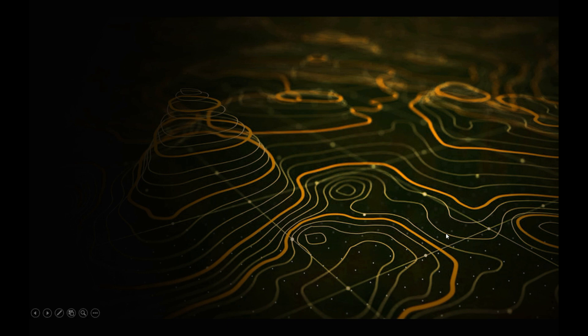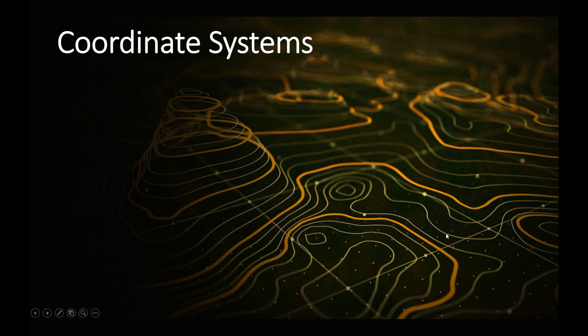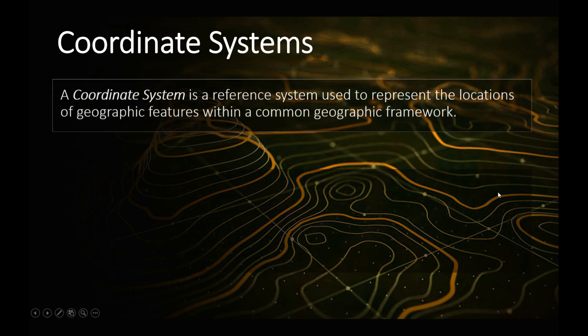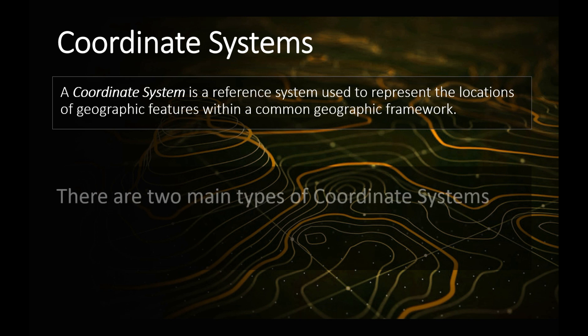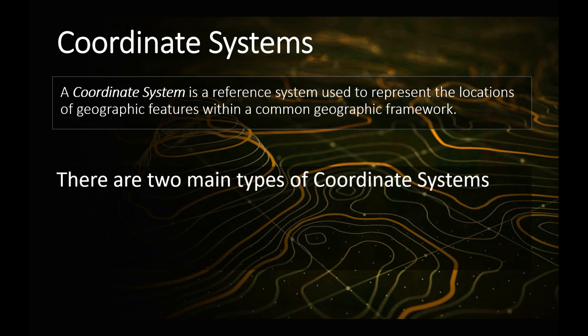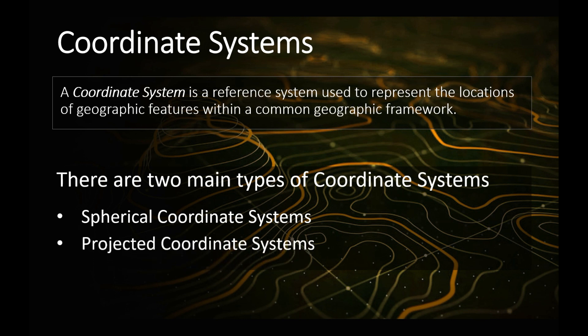There are essentially two main types of Coordinate Systems. A Coordinate System is a reference system used to represent the locations of geographic features within a common geographic framework. There are two main types: Spherical Coordinate Systems and Projected Coordinate Systems.